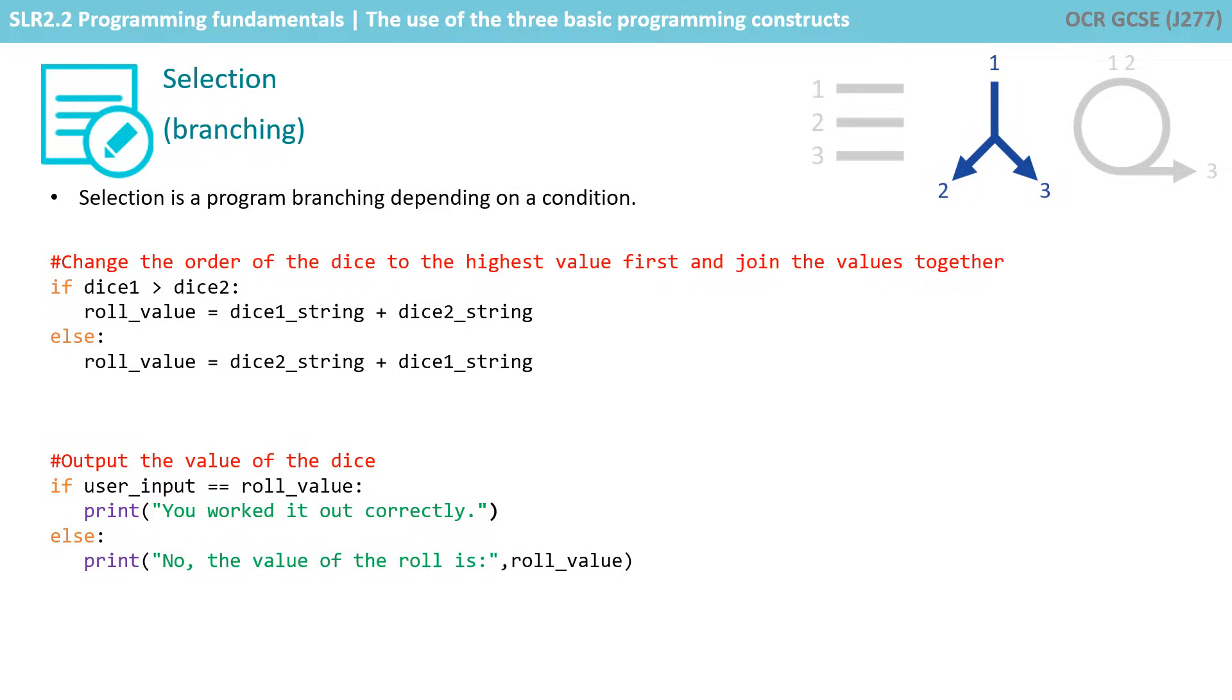If programs could only operate using sequence, though, they wouldn't be very intelligent. Branching is a construct that allows the program to end up going in a number of various directions depending on the outcome of a condition.